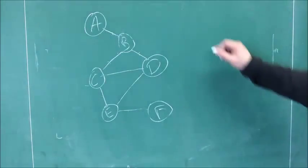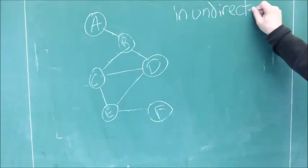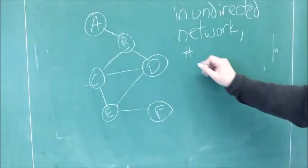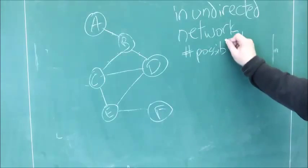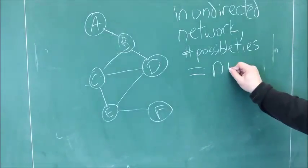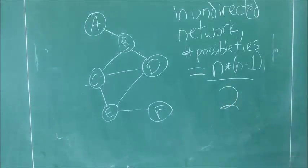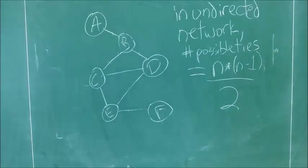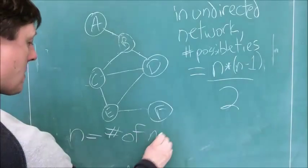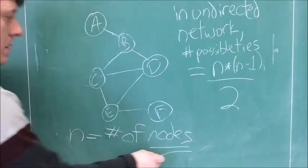Fortunately, there's a simple formula for it, and all a formula is is a series of steps to give you the answer. The number of possible ties varies in an undirected and in a directed network. Let's take a look at an undirected network first. In an undirected network, the number of possible ties equals n times (n minus 1) divided by 2, where n equals the number of nodes.